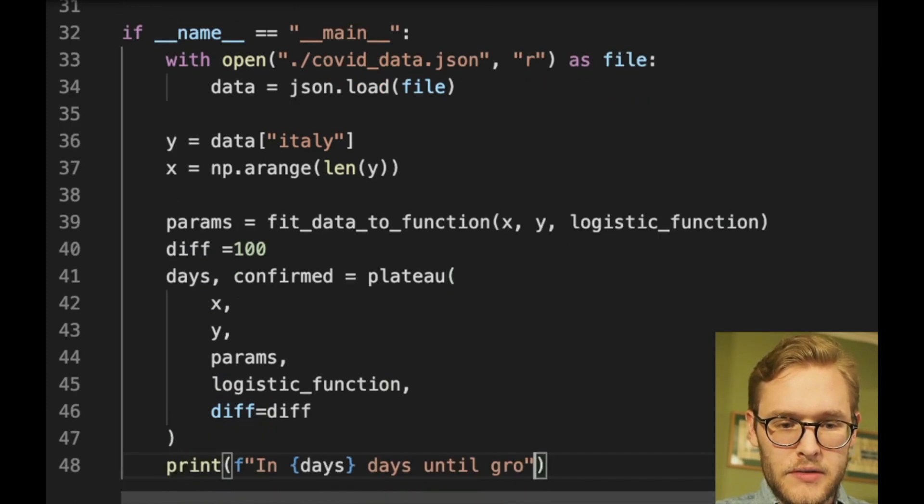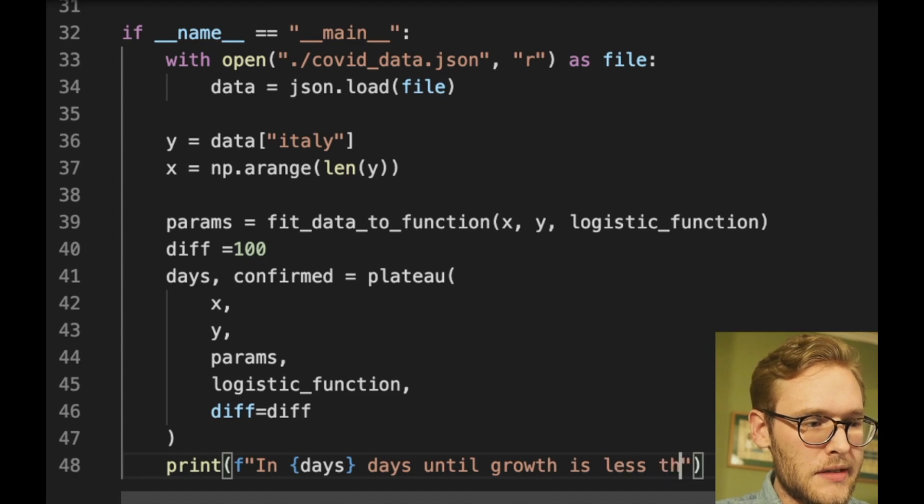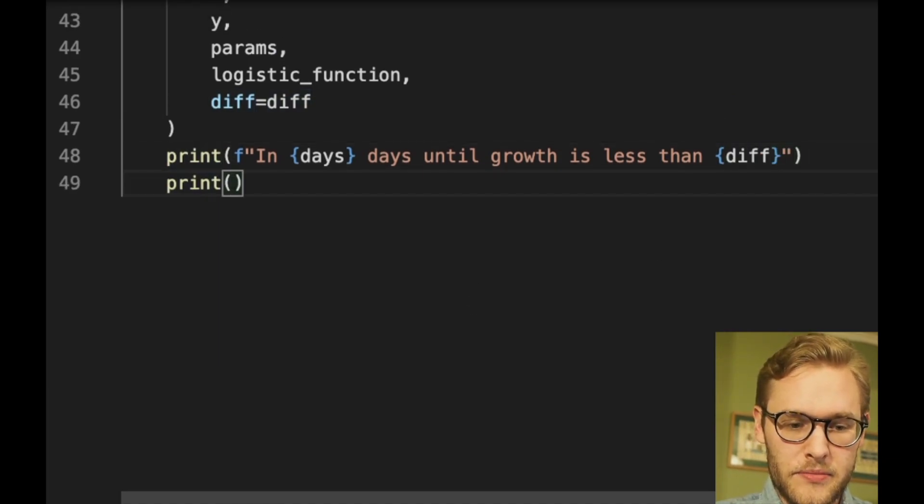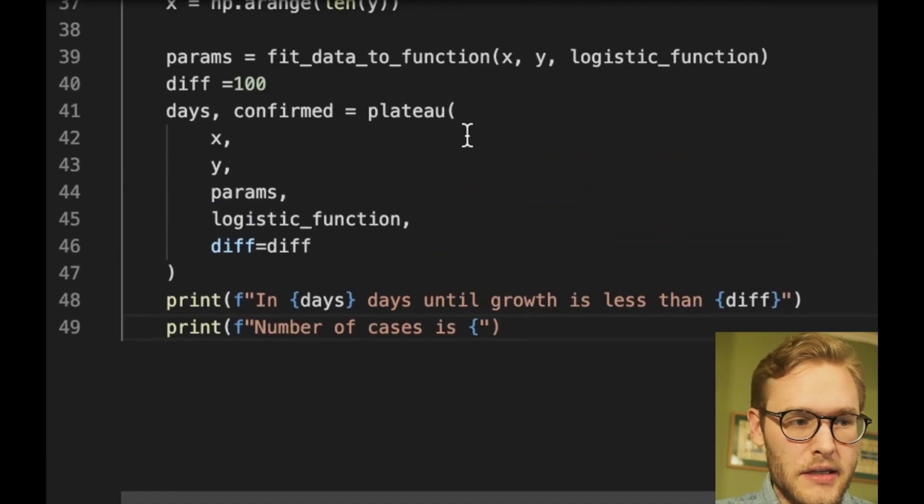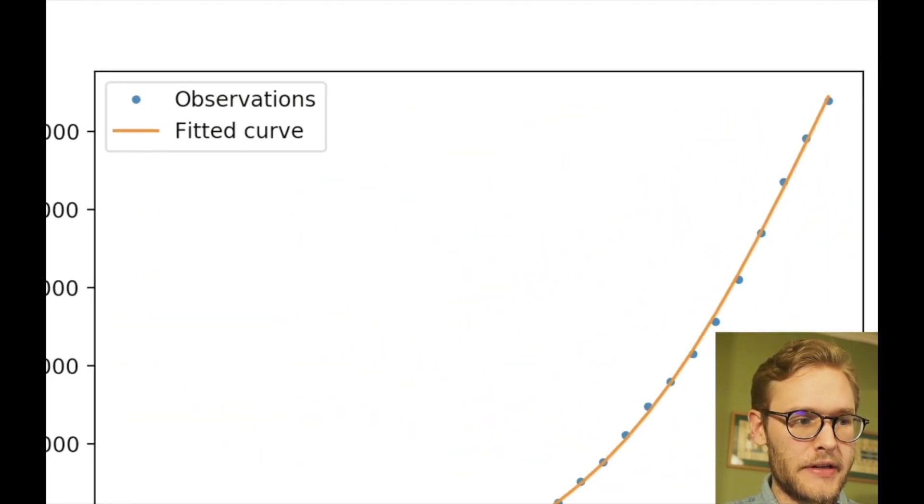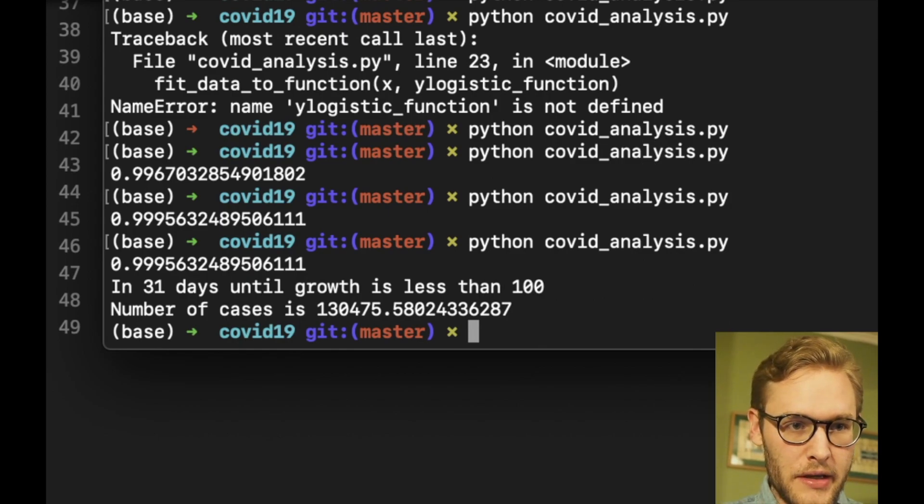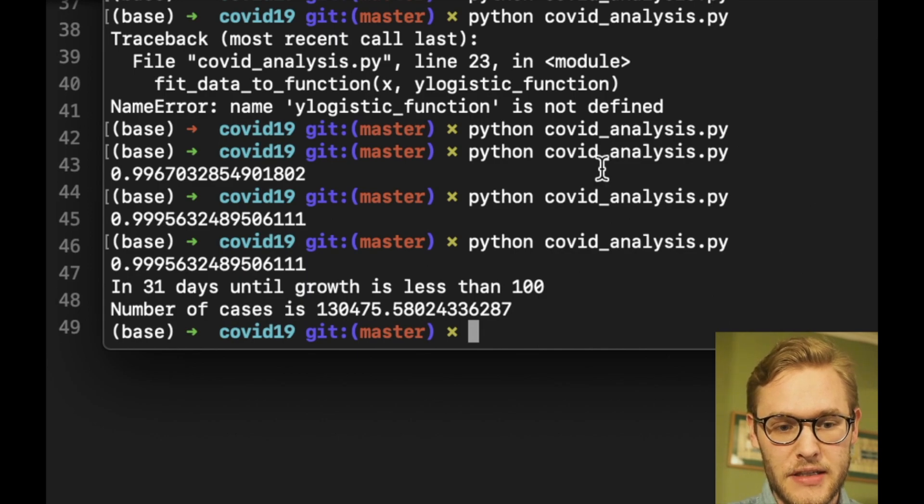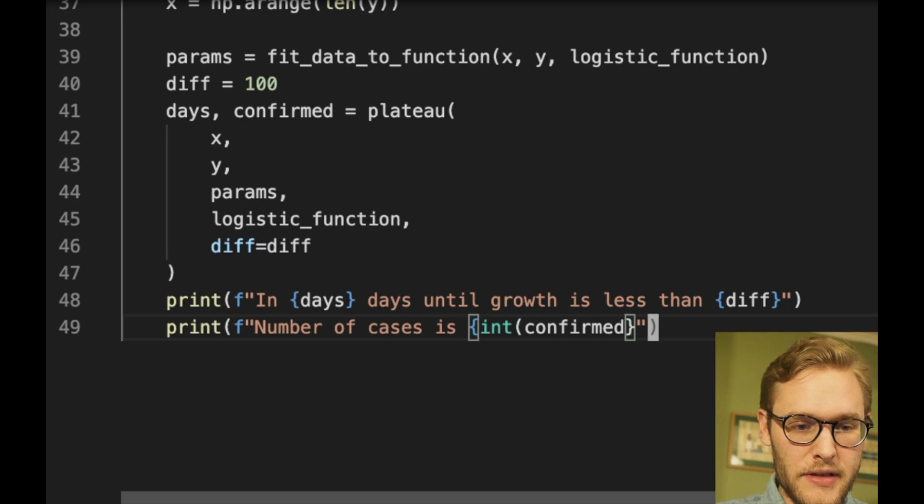And then we get days and confirmed now, so this is a y value. And then we'll print in days, days until growth is less than diff. And we'll say that diff is equal to the diff that makes sense. Until growth is less than diff. And then we also print number of cases is, and then there we take the confirmed variable. Let's try it. So first we get our nice graph. Close that and it should continue. And here you see your printouts. Firstly we have a very nice fit. And we say that in 31 days, so approximately a month, until the growth is less than 100 people. And then we'll have 130,400 cases. We'll take just the integer value of this. Cool.